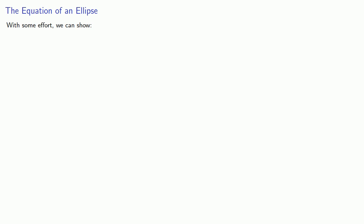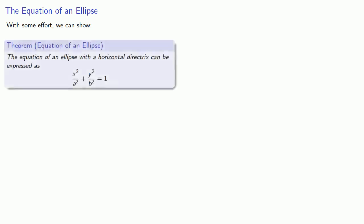With some effort, we can show that the equation of an ellipse with a horizontal directrix can be expressed as x² over a² plus y² over b² equal to 1.